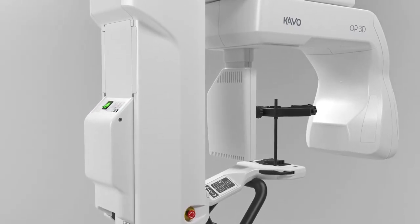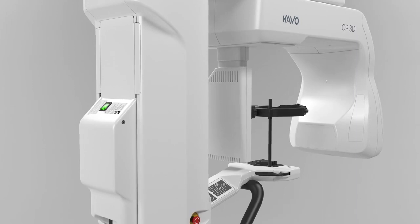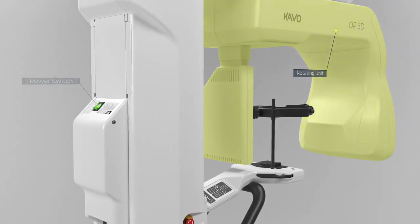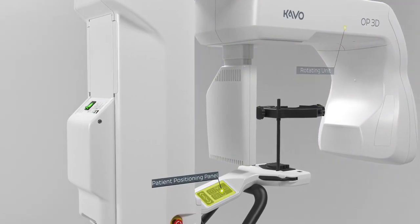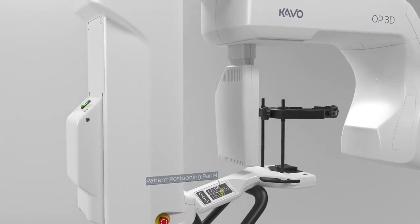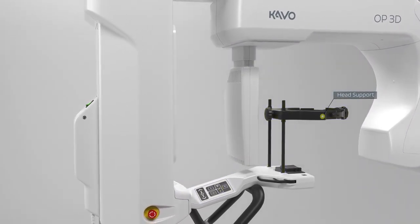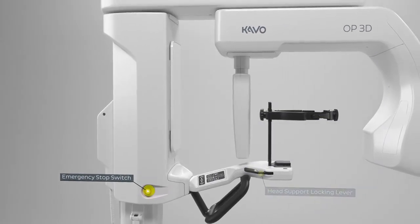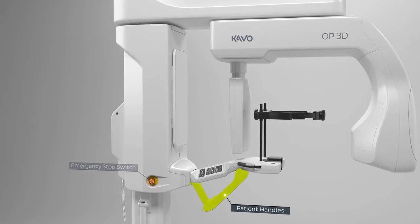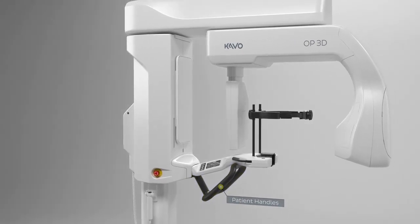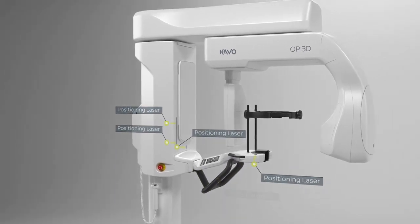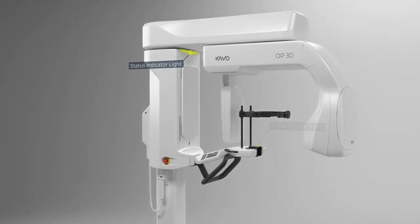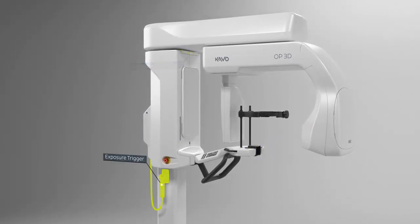Areas to familiarize yourself with on the OP3D are the power switch, the rotating unit, the patient positioning panel, the head support, head support locking lever, emergency stop switch, patient handles, positioning lasers, patient chin rest, status indicator light, and the exposure trigger.